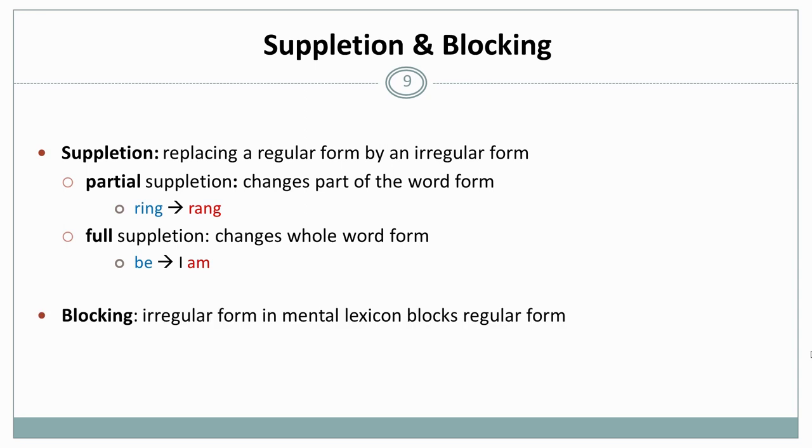And blocking, then, is the idea that the irregular form in the mental lexicon blocks the regular form. The irregular form cannot be derived, so it's stored separately in the mental lexicon from our stem. So again, as the irregular form already exists in the mental lexicon, it blocks the application of the regular rule that would normally apply and give us the form that we want.